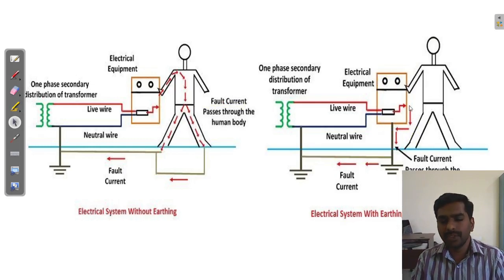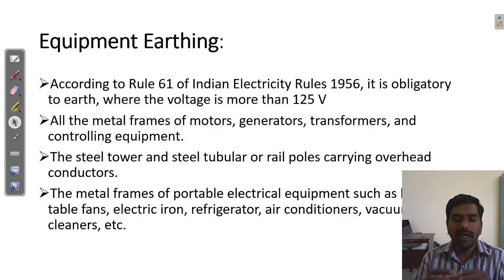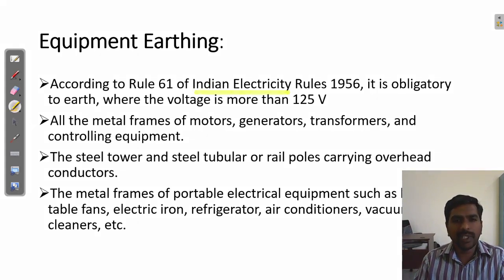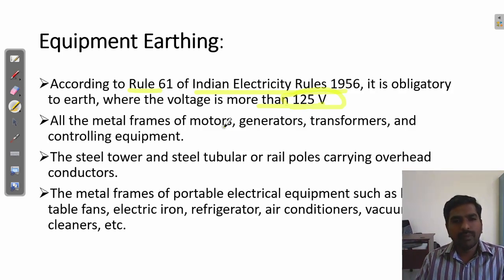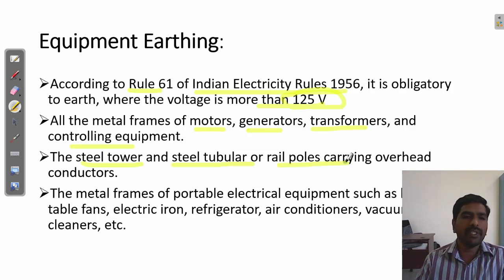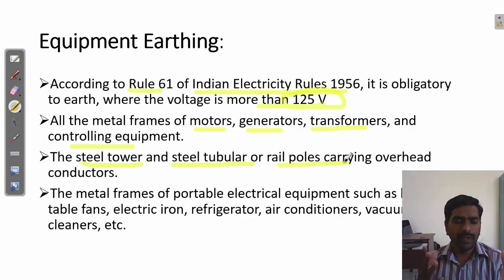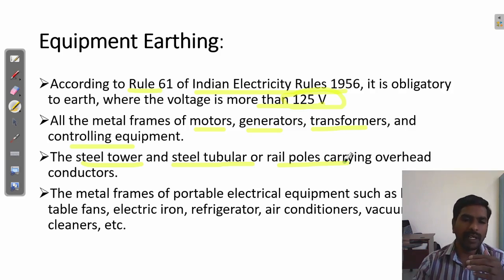If no earthing, human will get electric shock. Earthing is very important. The earthing equipment used in our home or industry is mentioned by Indian Electrical Rules 1956, Rule Number 61. It says that wherever voltage more than 125 volts is used, it should be earthed. The source, equipment, or appliances should be grounded. All metal frames of motors, generators, transformers, and controlling equipment should be grounded. Steel towers, steel tubular, or rail poles carrying overhead conductors should be grounded.